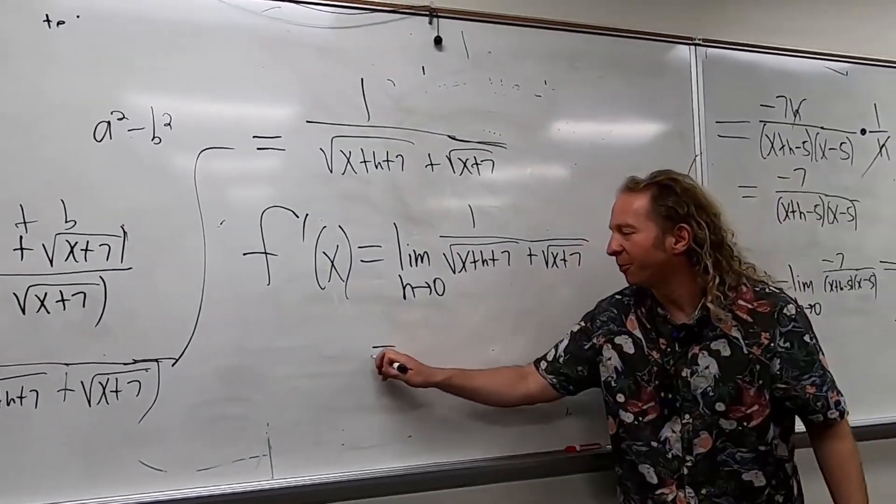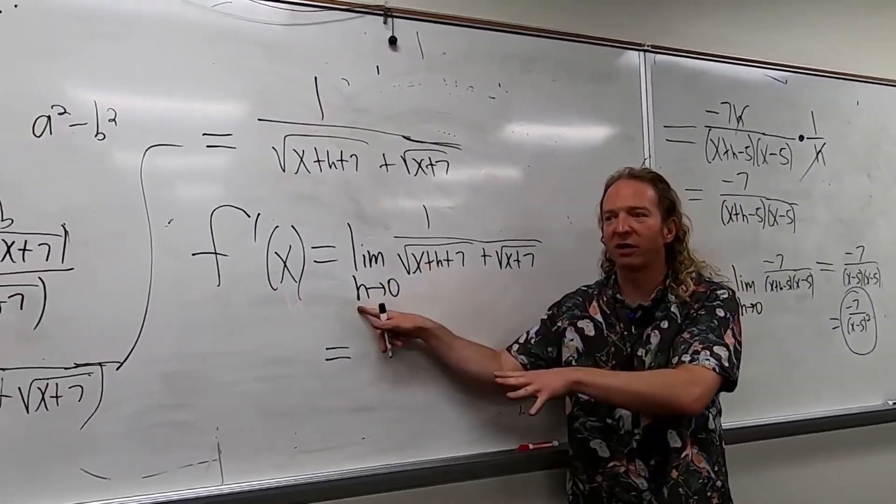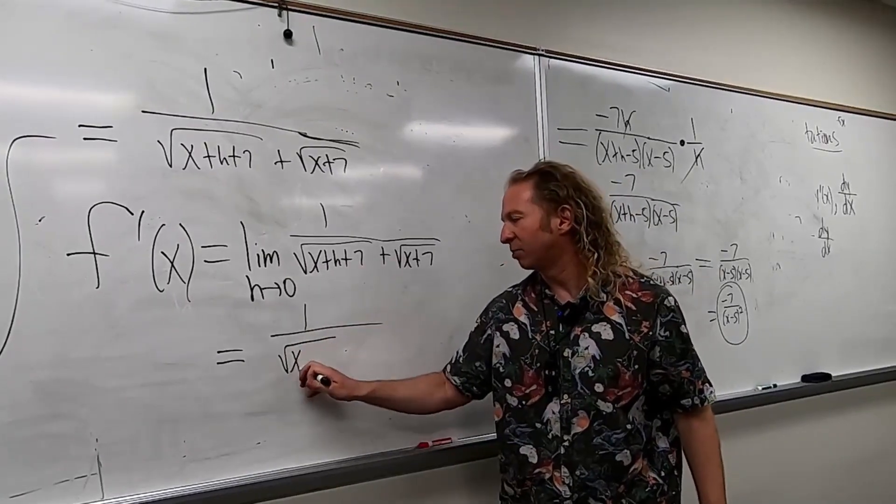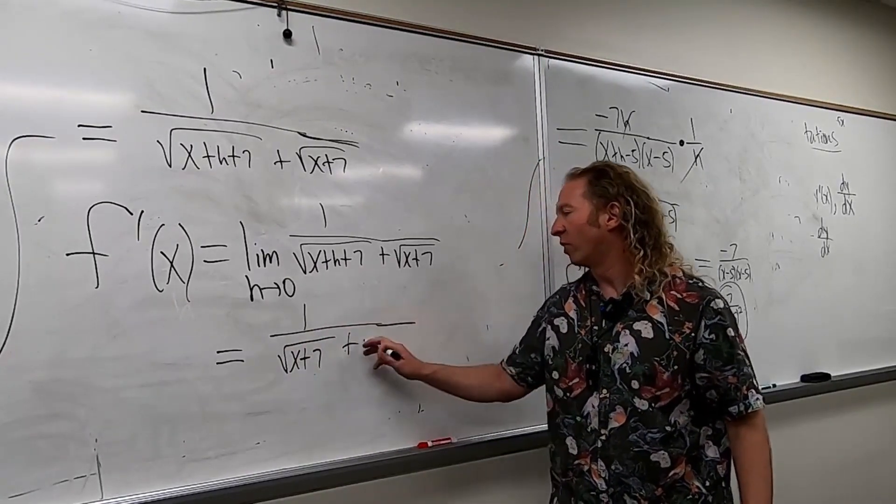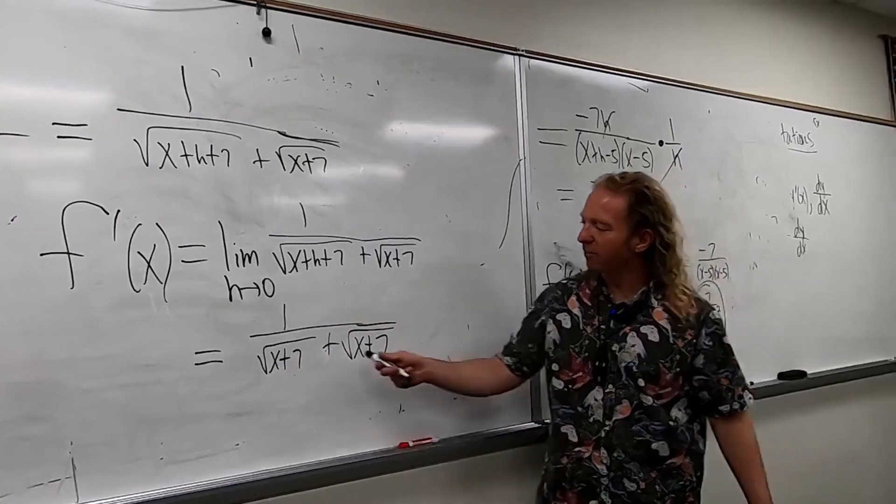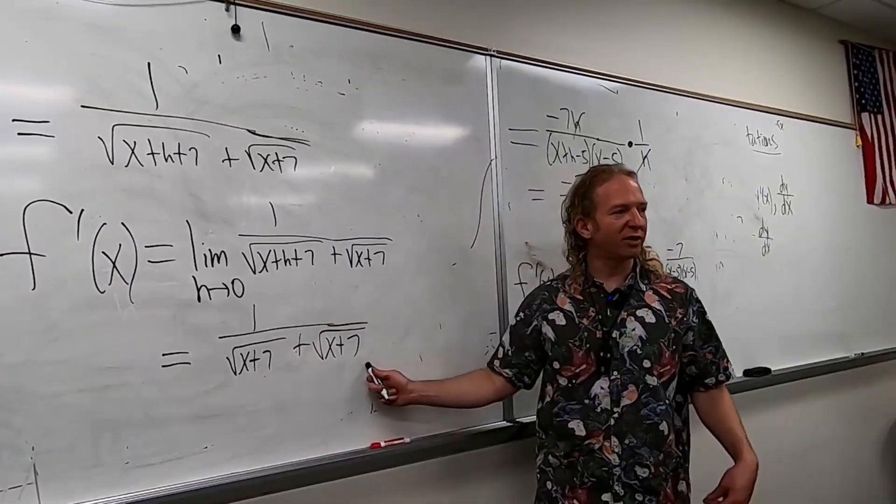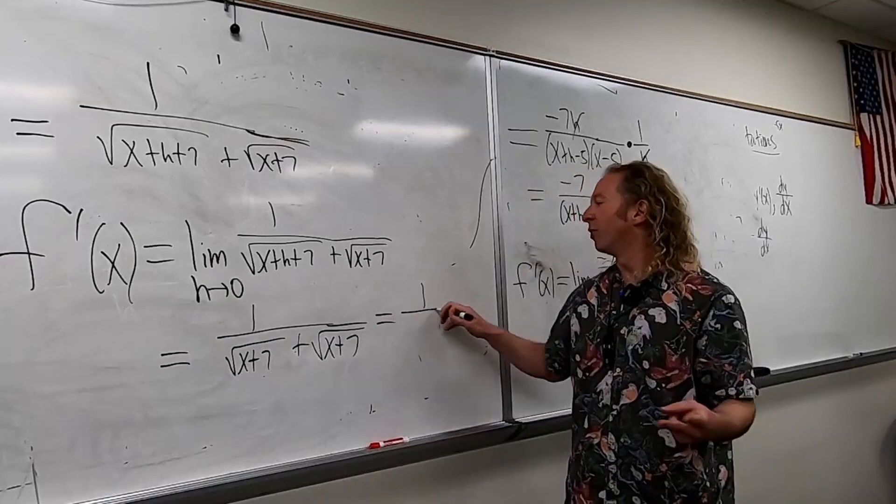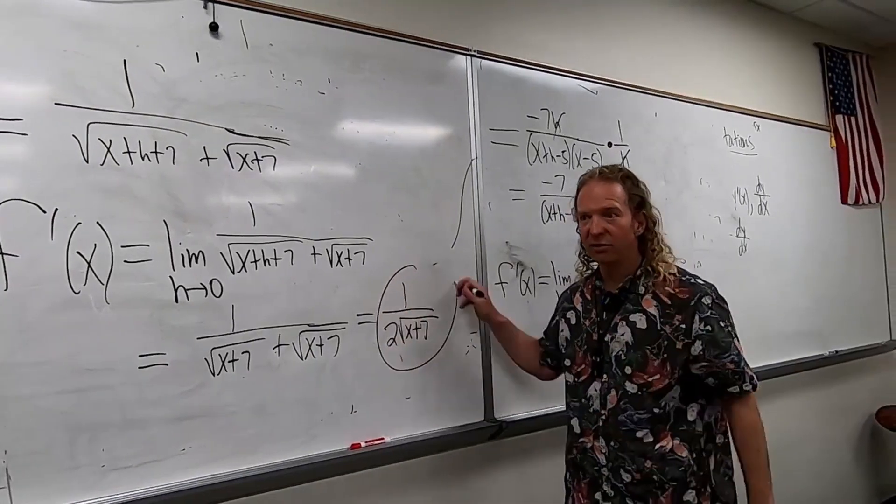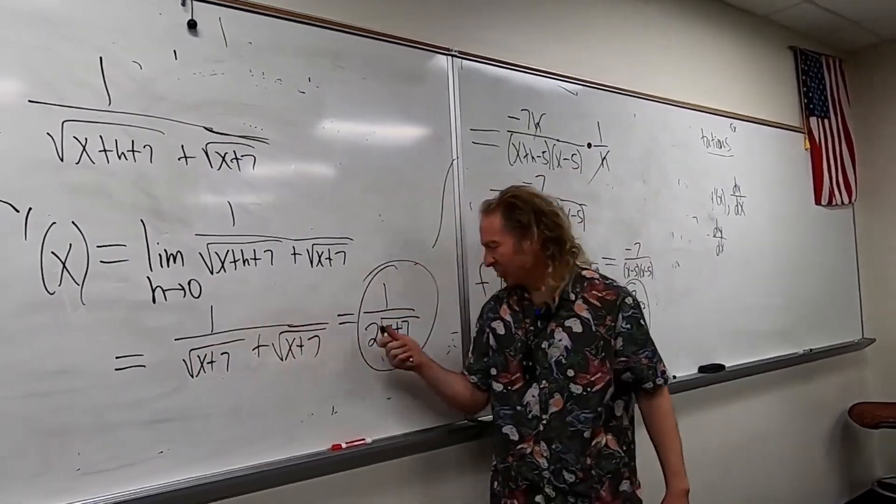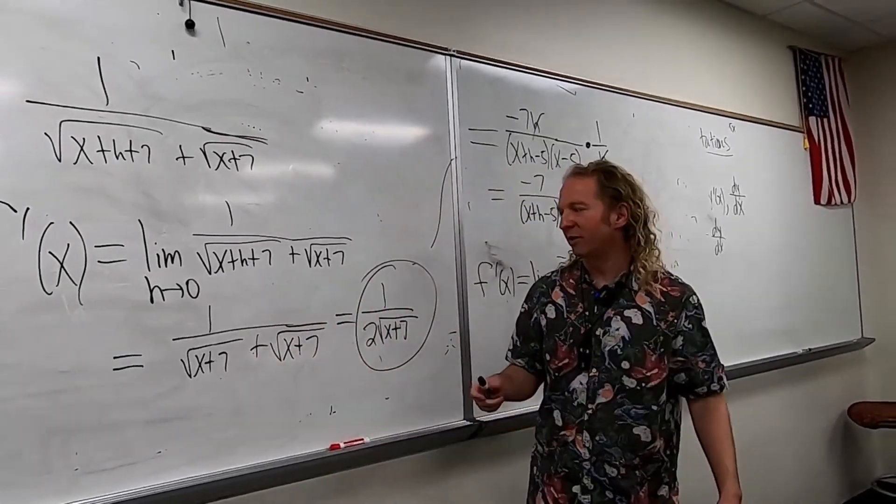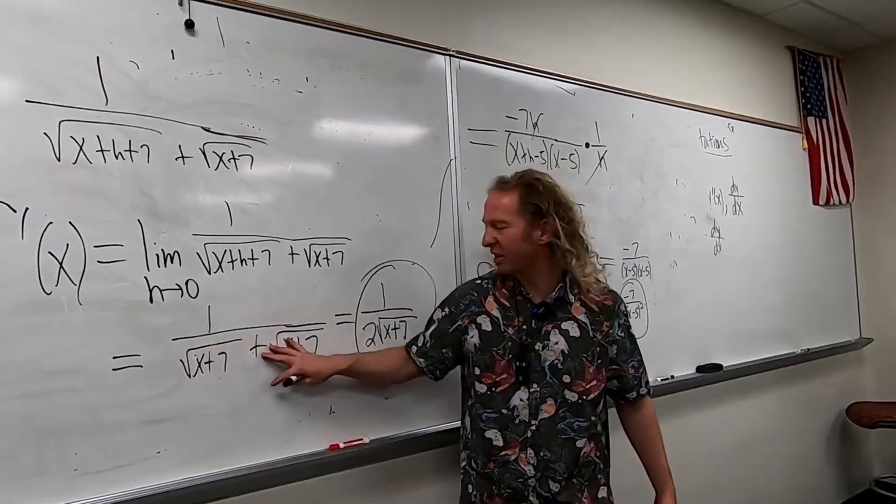Now you plug in 0. You get square root x plus 7 plus square root x plus 7, because the h is 0. So you have 1 of these plus 1 of these, which gives you 2 of those. So it's 1 over 2 square root of x plus 7. That's the derivative. This thing plus this thing is 2 of that thing.